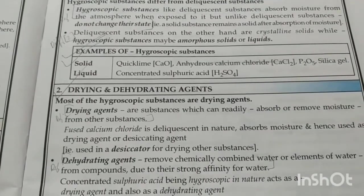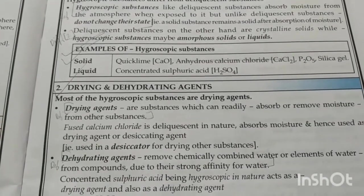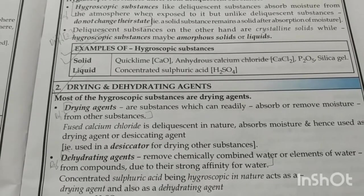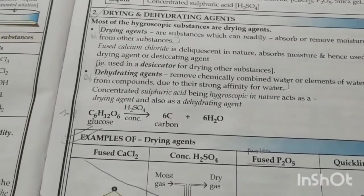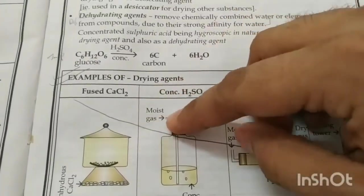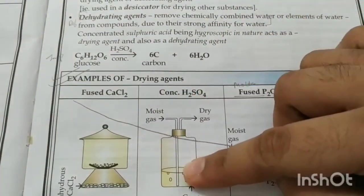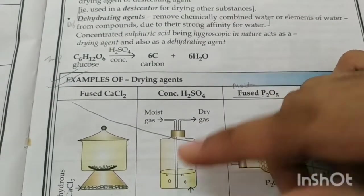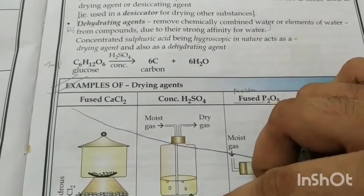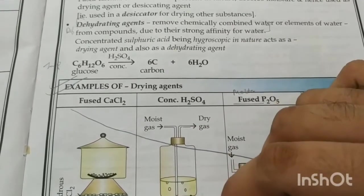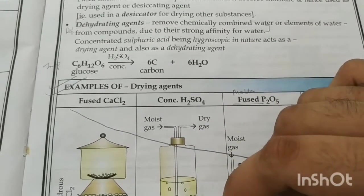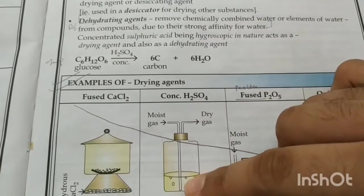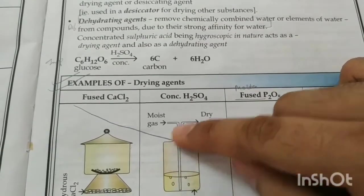We must be careful which hygroscopic substance is used as a drying agent, because no chemical reaction should take place. For example, if we have moist HCl gas and want to dry it, we can't use calcium oxide because it is a base and would react with HCl in a neutralization reaction. Instead, we use concentrated sulfuric acid, which won't react with HCl but will absorb all the moisture, giving us dry HCl gas.